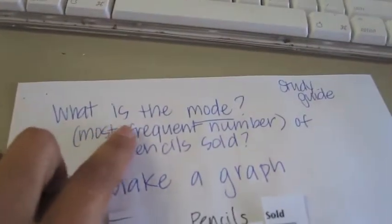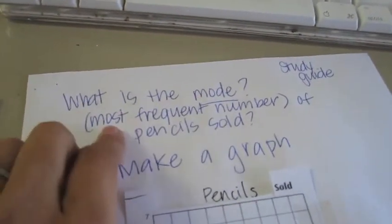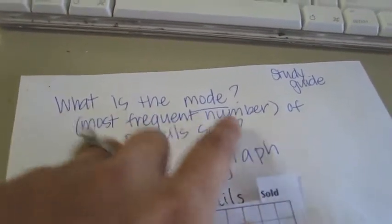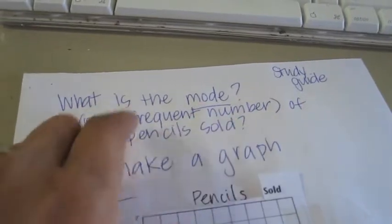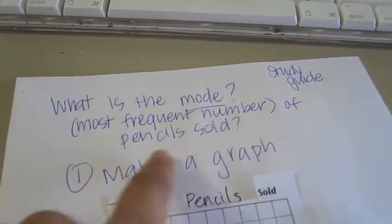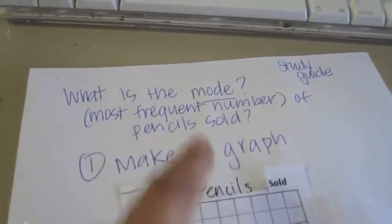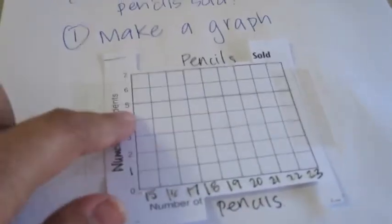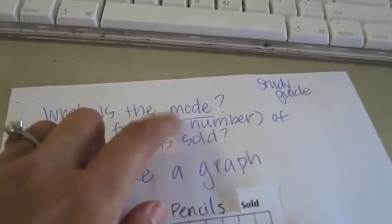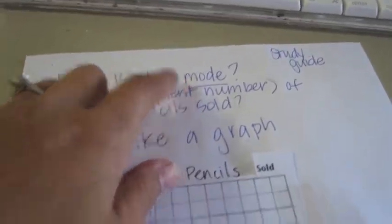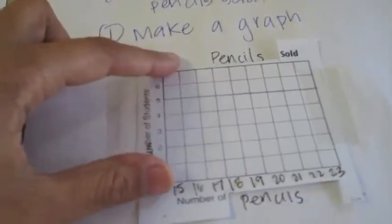What is the mode? The mode is the most frequent number — the most frequent number of pencils sold. We're going to make a graph first so you can figure out the mode. Your chart information fills in the graph.